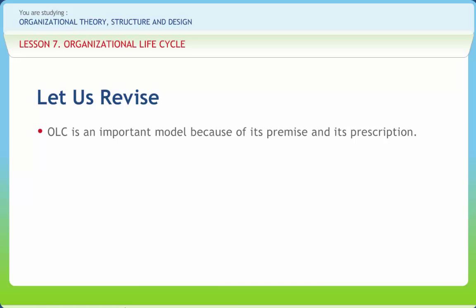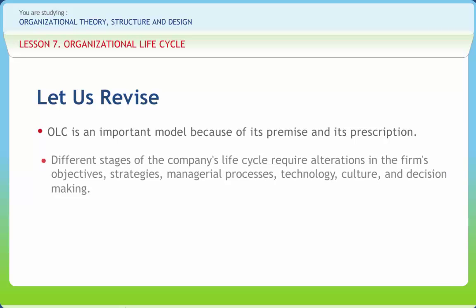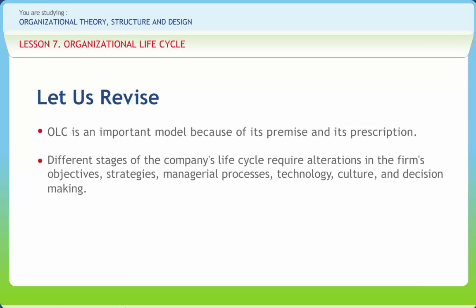The OLC model's prescription is that a company's managers must change its business goals, strategies, and strategy implementation devices to fit the internal and external characteristics of each stage. Different stages of the company's life cycle require alterations in the firm's objectives, strategies, managerial processes like planning, organizing, staffing, directing and controlling, technology, culture, and decision making.